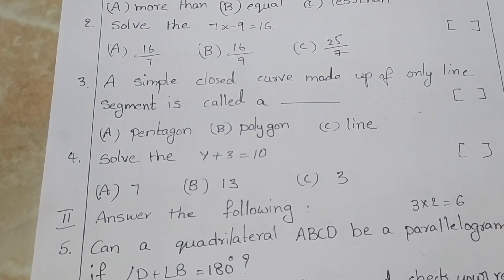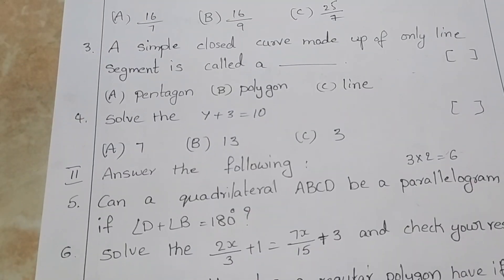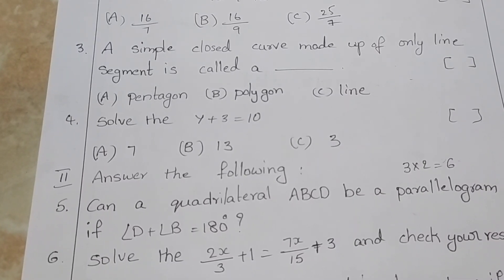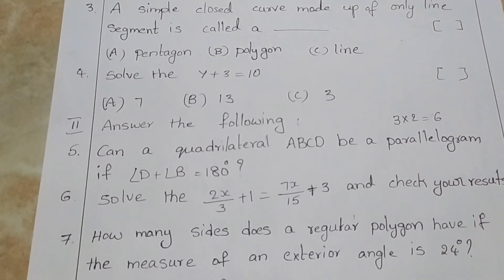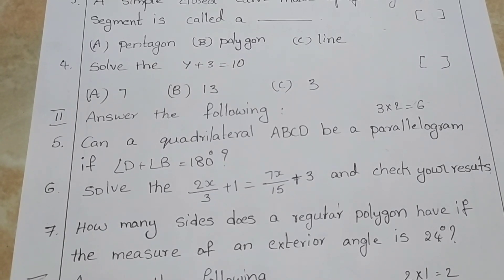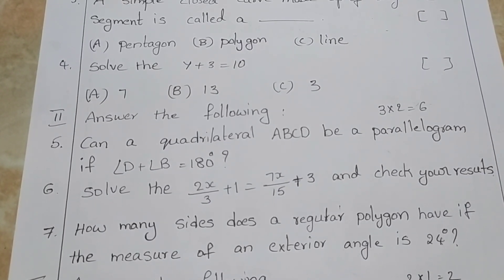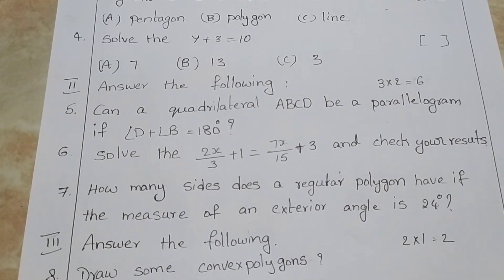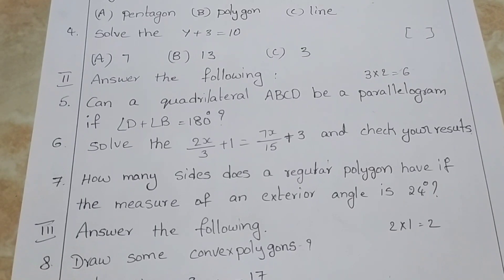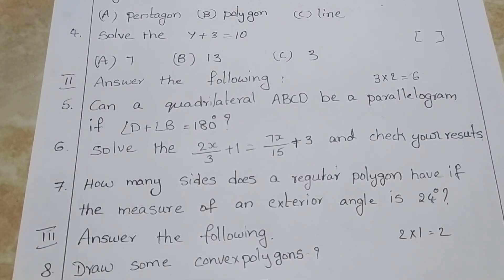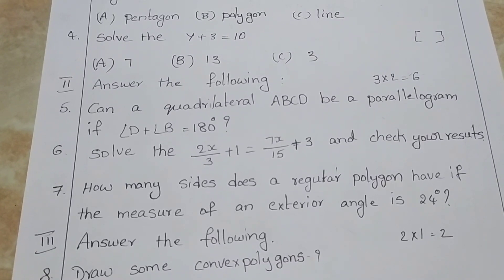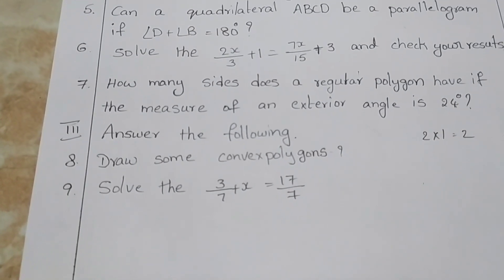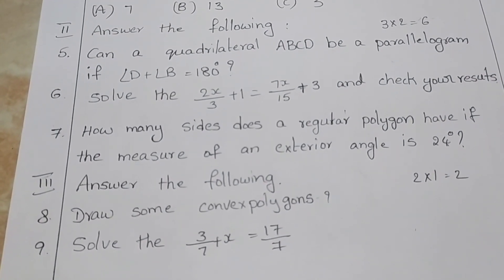Answer the following: Quadrilateral ABCD is a parallelogram. If angle D plus angle B equals 80 degrees, solve it. Solve 2x/3 plus 1 equals 7x/15 plus 3, and check your results. How many sides does a regular polygon have if the measure of an exterior angle is 24 degrees?